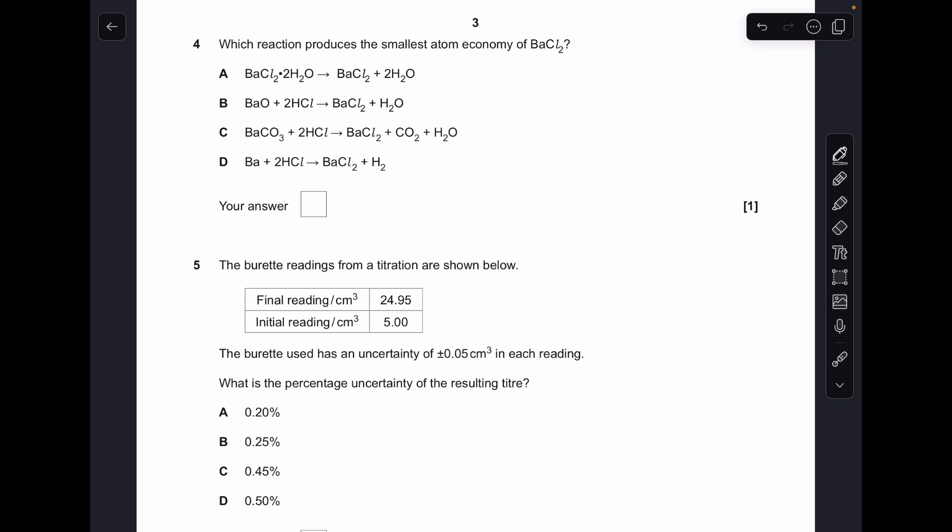Number 4, quick way to do this is just look at your waste products, and the one with the highest MR of waste will be the lowest atom economy. So C's got the heaviest waste products, so that will have the lowest atom economy. So C is the answer.